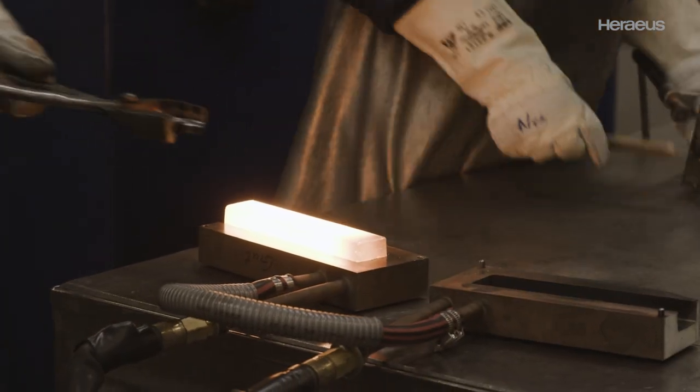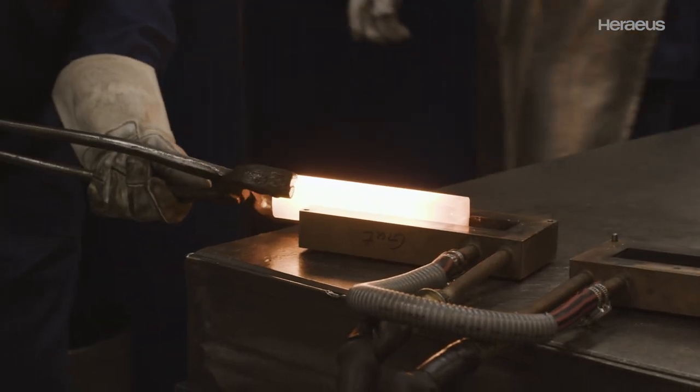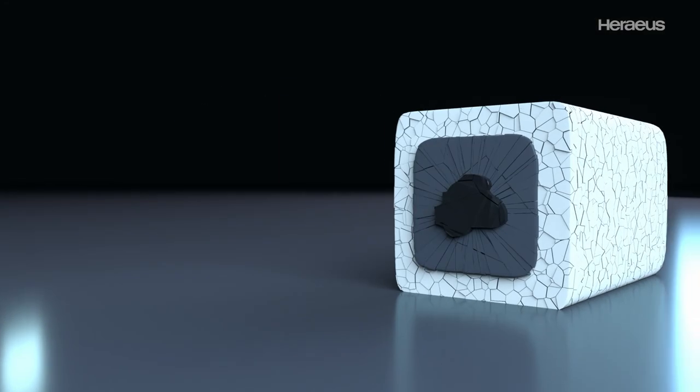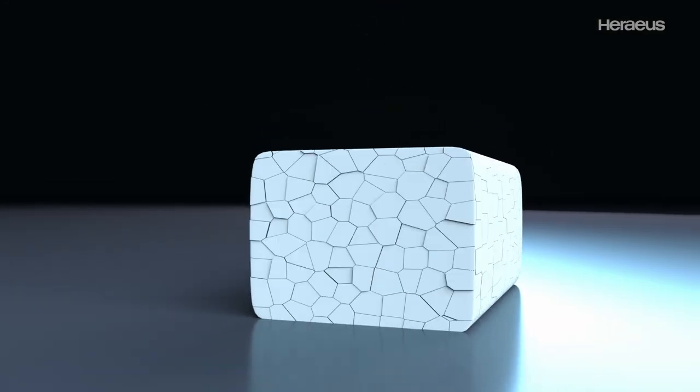While the ingot is still red hot, it is wrought in the forging line. This ensures that the finished wire properties are homogenous at all points.